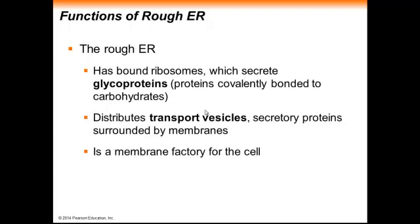The rough ER, since it contains ribosomes, is responsible for protein production. There are a number of proteins that can be produced in the ER. After it produces proteins, the ER packages these proteins into transport vesicles that are sent throughout the cell. Another function of the rough ER is that it helps produce membranes for the cell.